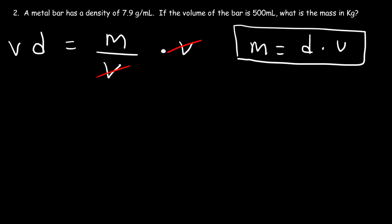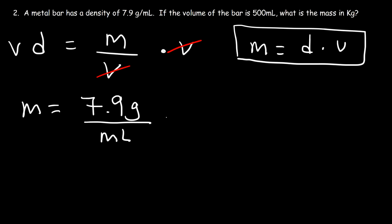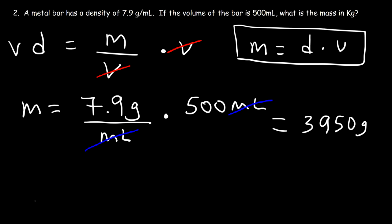Let's look at the units to see why this makes sense. The density is 7.9 grams per milliliter. If we multiply that by 500 milliliters, notice how the unit milliliters cancels, leaving us with the unit of grams, which is the unit for mass. So the mass is 7.9 times 500, which is 3,950 grams. And so this is the answer.